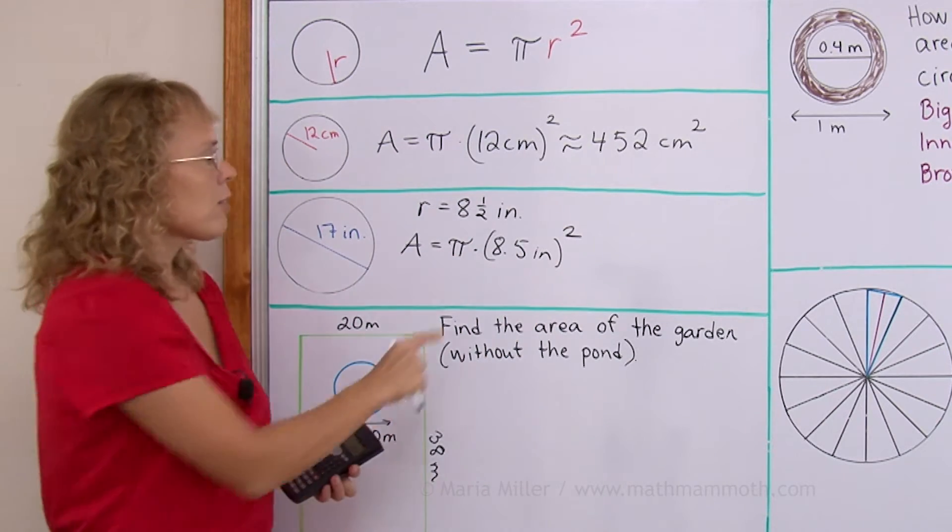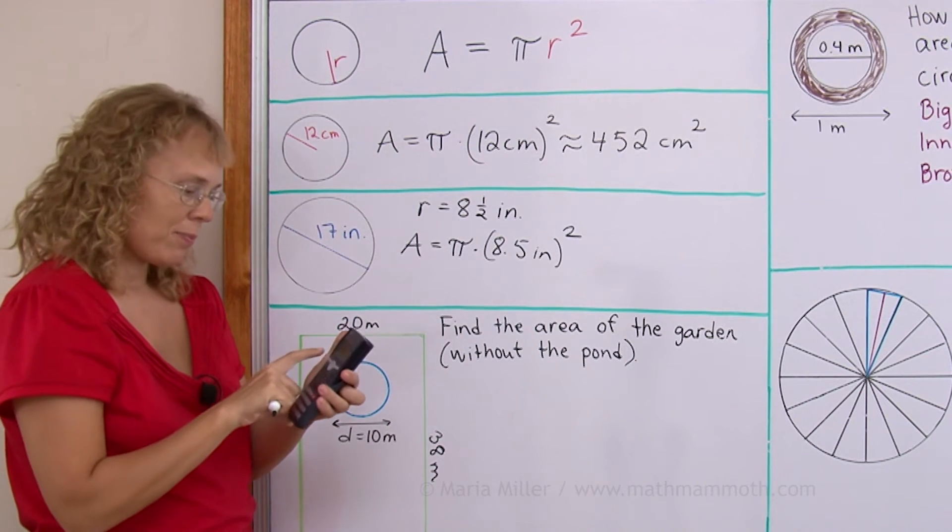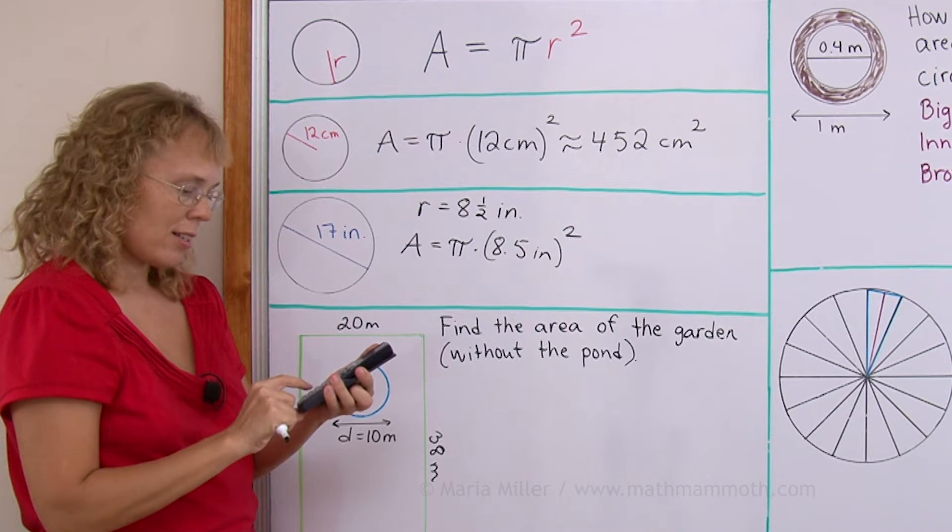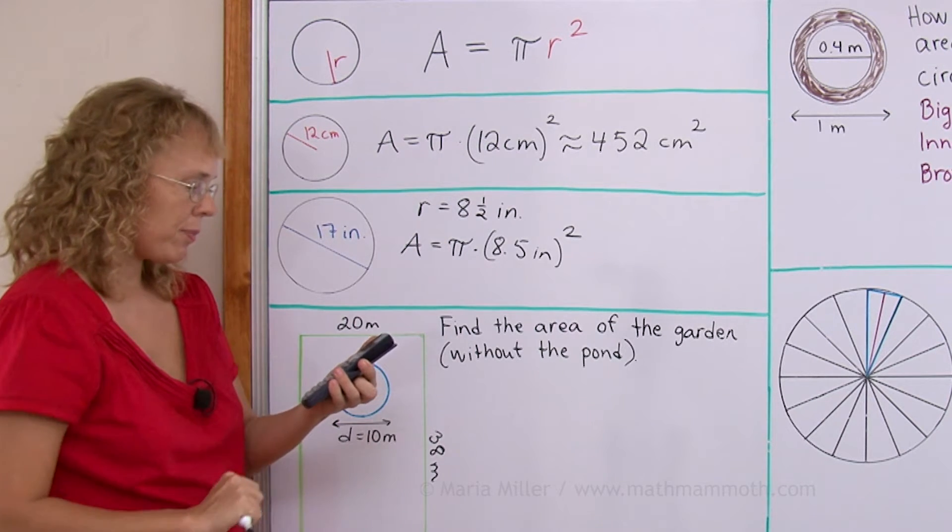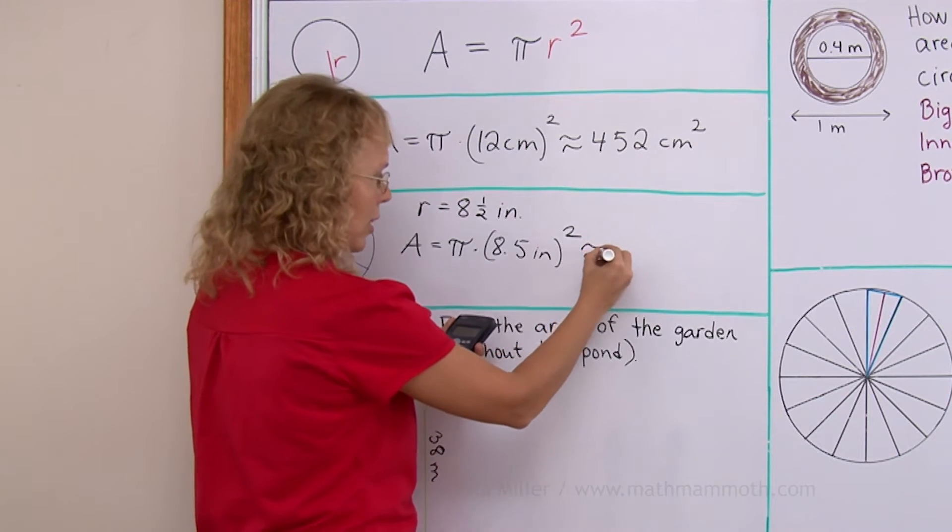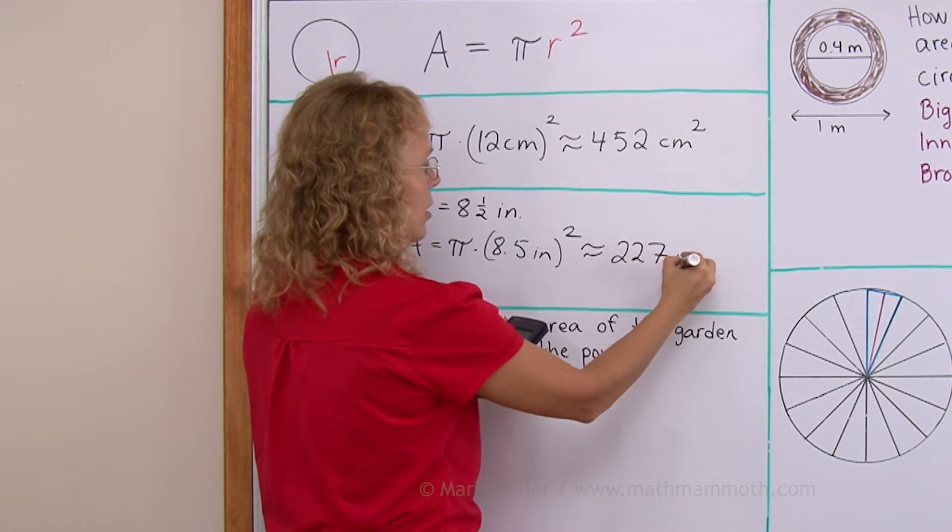And now you calculate 8.5 times 8.5 times pi or in some other order. You can calculate pi times 8.5 times 8.5 as well. And we will get, again, I'm gonna round this to 227 square inches.